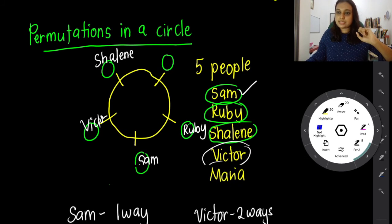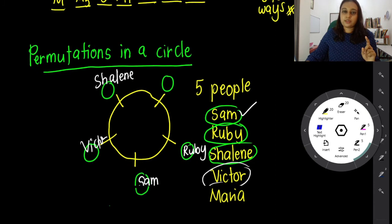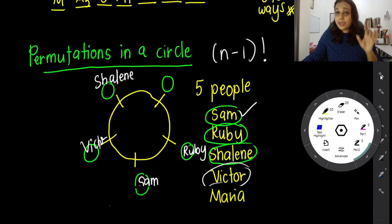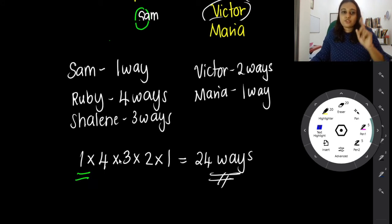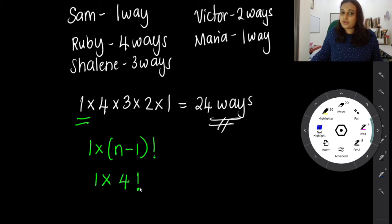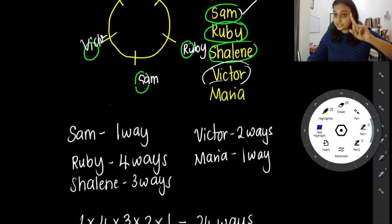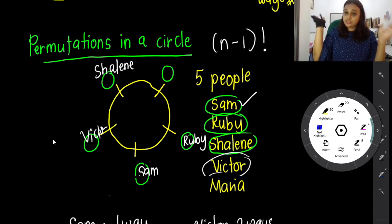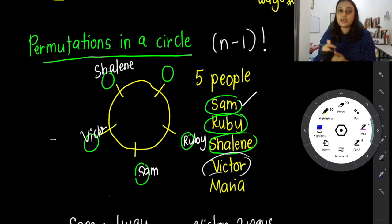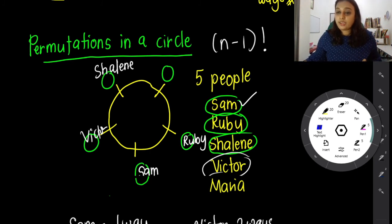This is why the formula for permutations in a circle is (n minus 1) factorial. Why minus one? Because the first person only has one way to sit - no matter where they sit, their view and the positions beside them (left and right) will always look the same. So it's actually one times (n minus 1) factorial, which we write as (n-1)!. For five people: one times four factorial equals 24. Please understand this - circle permutations are very easy once you think about the view.